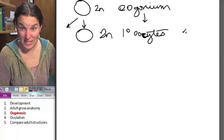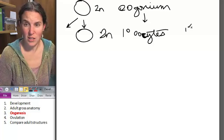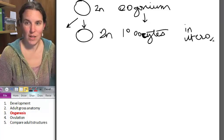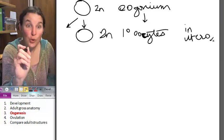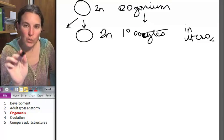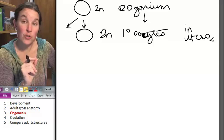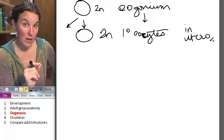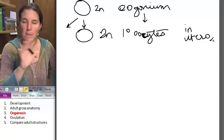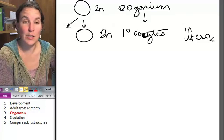This is in utero. When you ladies were in your mama's bellies, you had these primary oocytes, 500,000 of them, not 500 million of them, 500,000 of them in each ovary, a million total.